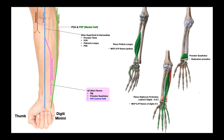The first muscle innervated by the anterior interosseous nerve is flexor pollicis longus. Pollux is another term for the thumb, so this muscle is going to flex the thumb at the metacarpophalangeal and interphalangeal joints — just digit one. The second muscle is pronator quadratus, which is going to pronate the forearm, involved in radio-ulnar pronation.